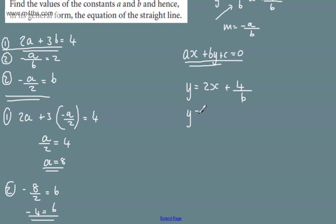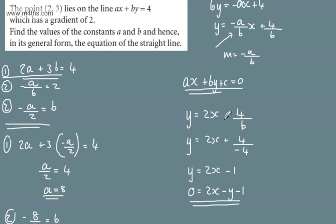We know that b is going to be minus 4. So, we can write that the line is y equals 2x plus now 4 over minus 4. So, we have y equals 2x minus 1. I'm going to rearrange in this particular form. We're going to have now 0 equals 2x minus y minus 1. And that now is the equation of the straight line in its general form.